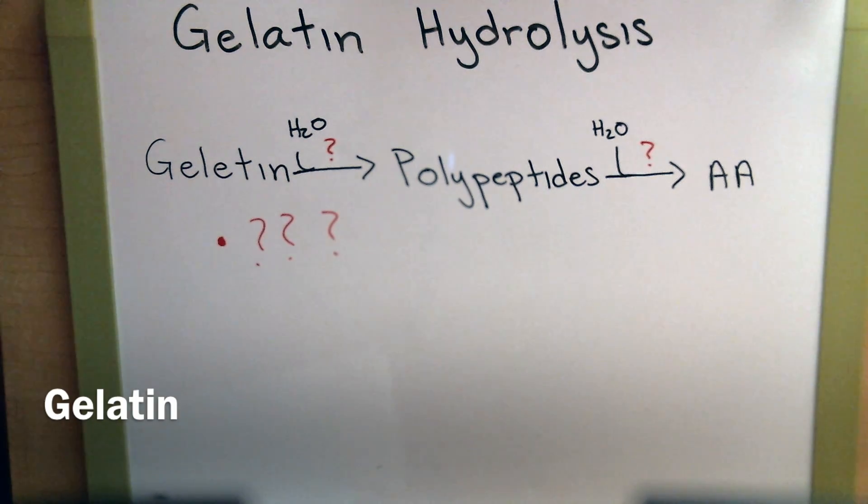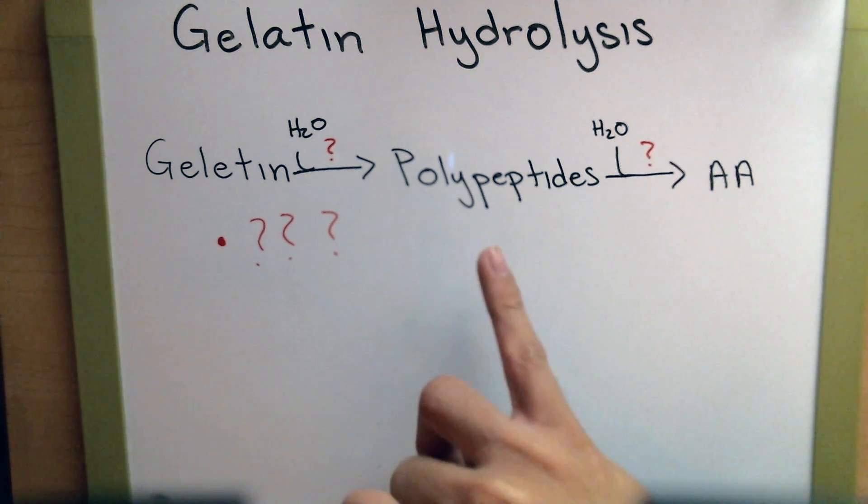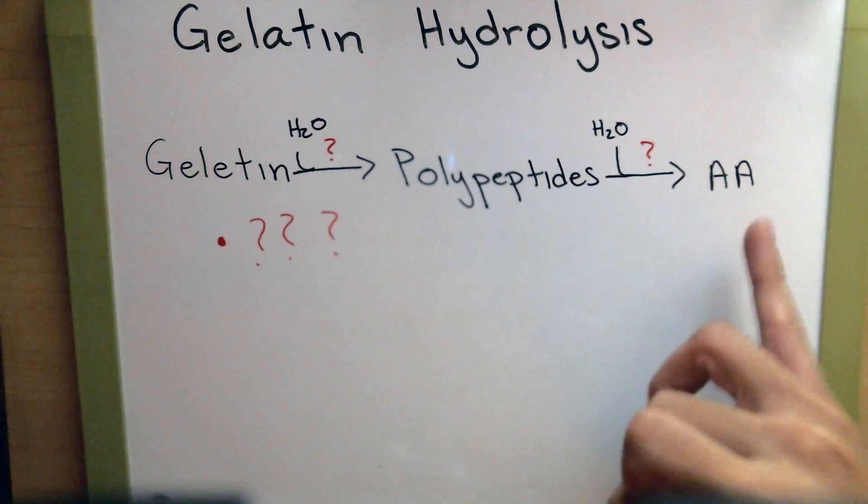First up we have gelatin hydrolysis. Gelatin is a protein that's derived from collagen, and basically some bacteria are able to break it down and use it as a source of nutrients. And it does so in two steps, where the gelatin is broken down to polypeptides and eventually into amino acids.